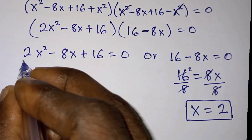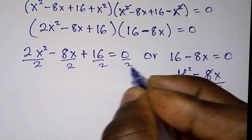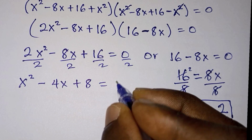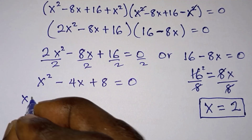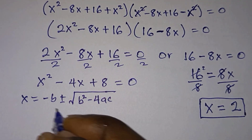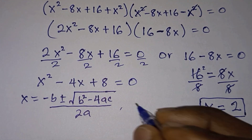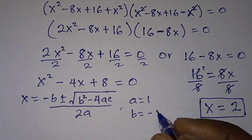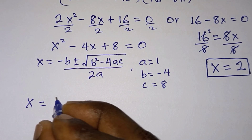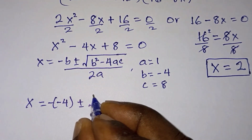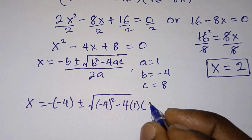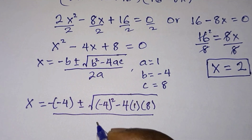From the first equation, let's divide through by 2, giving us x squared minus 4x plus 8 equals 0. Using the quadratic formula, x equals negative b plus or minus square root of (b squared minus 4ac), all divided by 2a. We see that a equals 1, b equals negative 4, and c equals 8. So we get x equals minus(negative 4) plus or minus square root of (negative 4) squared minus 4 times 1 times 8, all divided by 2 times 1.